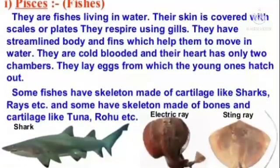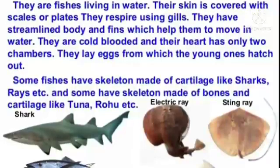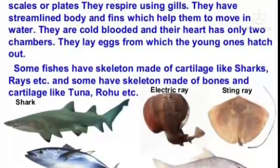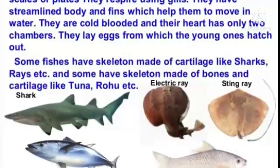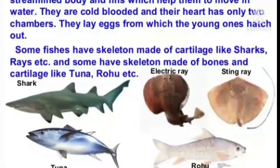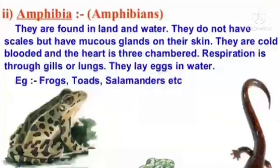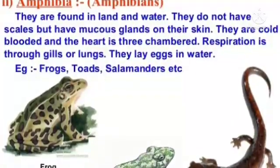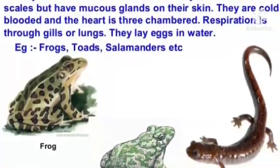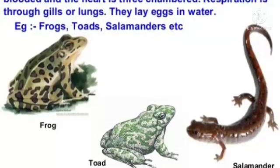Pisces (fishes): they live in water. Their skin is covered with scales or plates. They respire using gills. They have a streamlined body and fins which help them move in water. They are cold-blooded and their heart has only two chambers. They lay eggs. Some fishes have skeletons made of cartilage like sharks and rays, and some have skeletons made of bones like tuna, rohu, etc. Amphibia: they are found on land and in water. They do not have scales but have mucus glands on their skin. They are cold-blooded and the heart is three-chambered. Respiration is through gills or lungs. They lay eggs in water. Examples: frogs, toads, salamanders, etc.